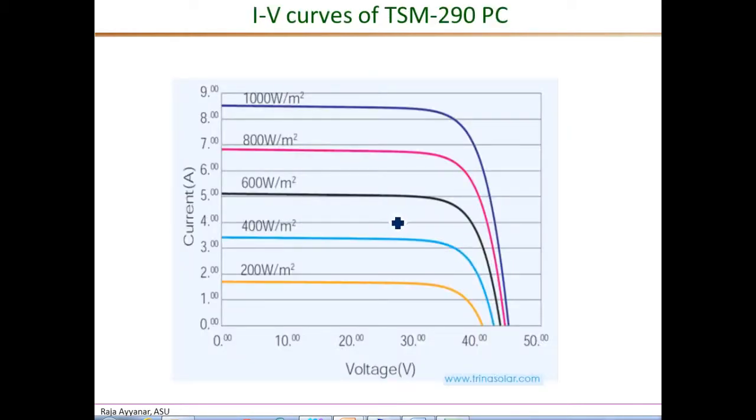These are the experimentally obtained IV curves as given in the data sheet. And they correspond to five different values of irradiance levels. So in fact, we use these curves to estimate the slope at the short circuit region and at the open circuit region to estimate some of the parameters.